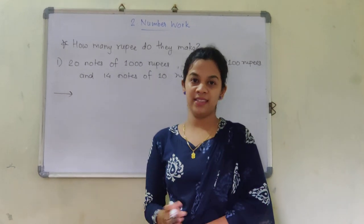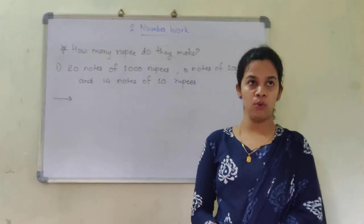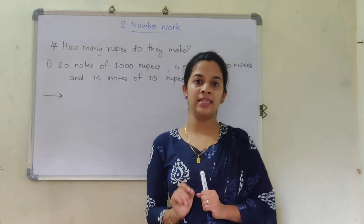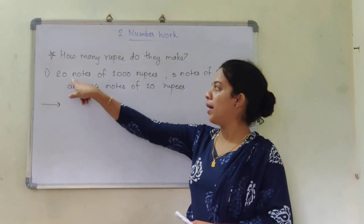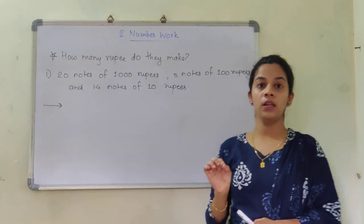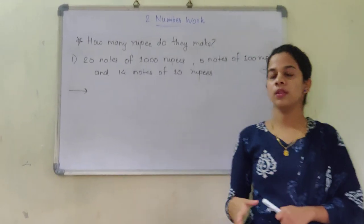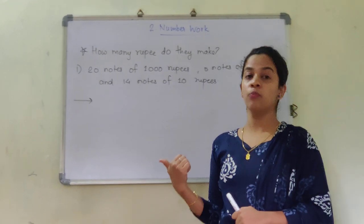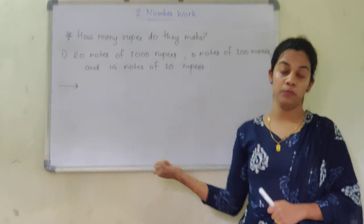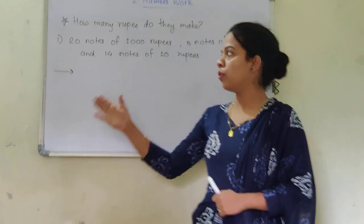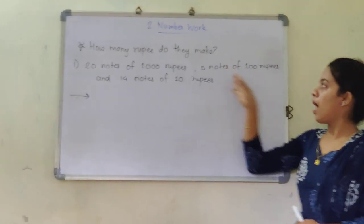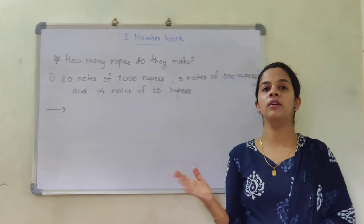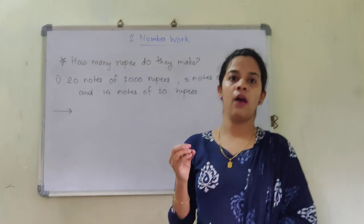How many rupees do they make? This is the next question from problem set 2. We are just going to calculate them — I will show you the easy trick and easy steps to solve it. Now: 20 notes of 1,000 rupees. Note that the 1,000 rupee denomination is currently not in use, but since it is part of the exercise in this old textbook, we are supposed to solve it.